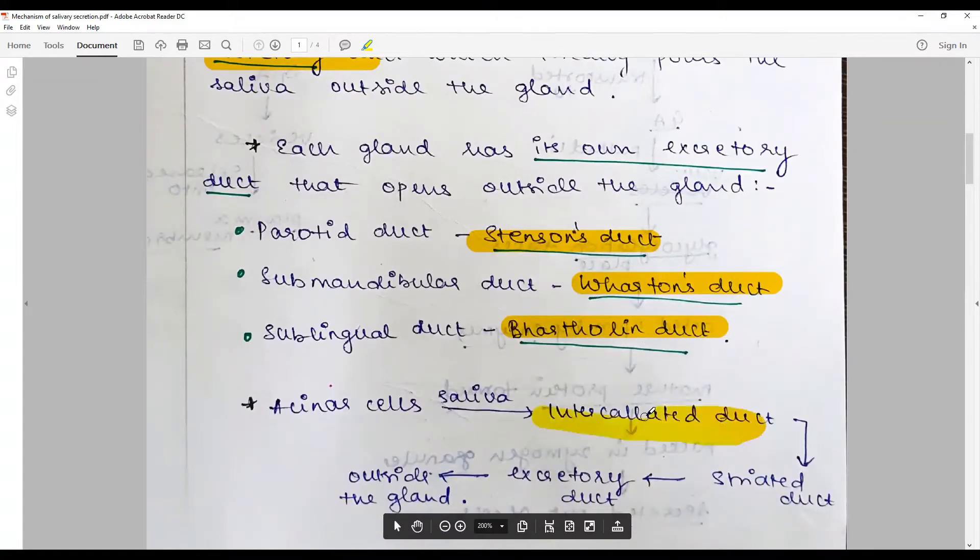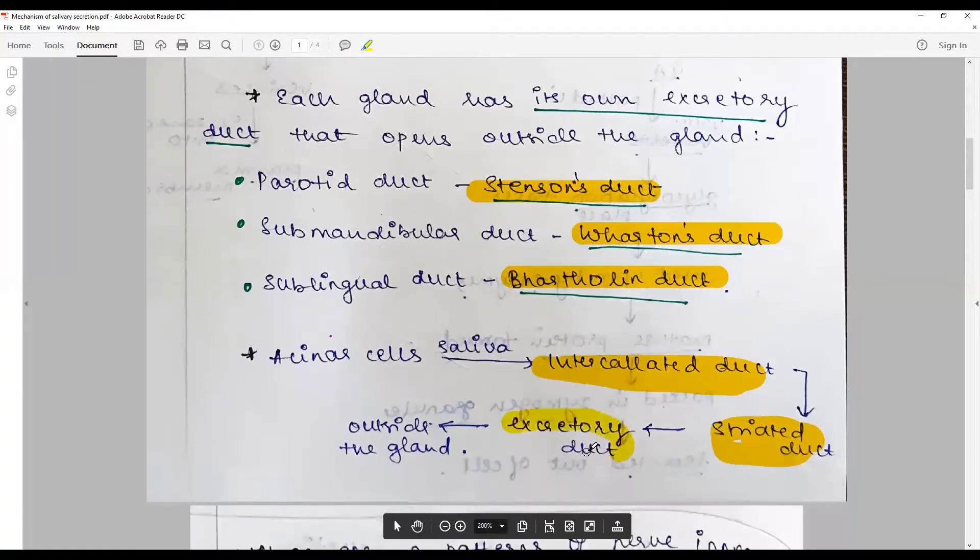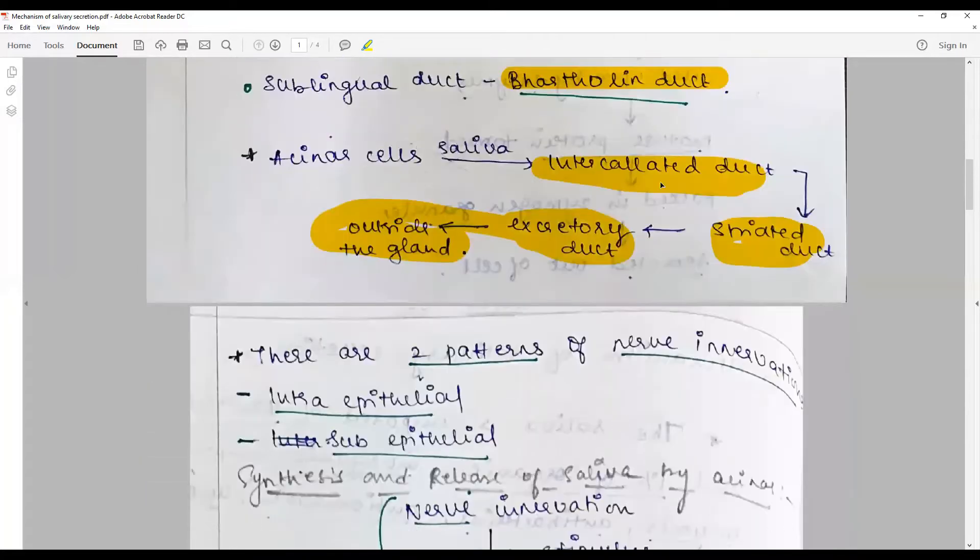The acinar secretes saliva which is collected in the intercalated ducts, undergoes certain modifications, then passes on to the striated duct where more modification happens, and it is excreted via the excretory duct. Only very few modifications take place in the excretory duct, but the majority of modification occurs at the intercalated and striated duct level.